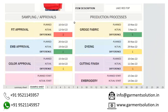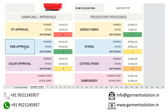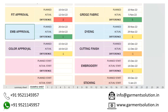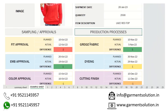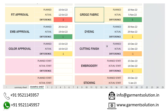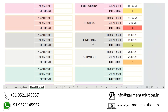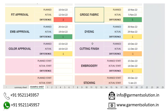Then there are two sections: one for different processes for sampling parts like fit approvals, color approvals, embroidery design or print card approvals; and one for the progression process like gray fabric, dyeing, cutting, embroidery, stitching, finishing, and the final shipment.